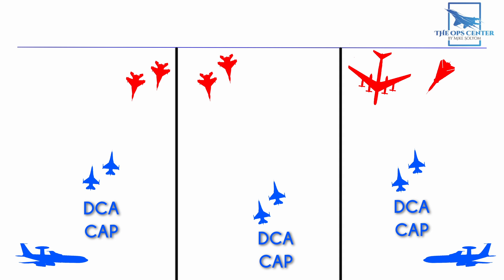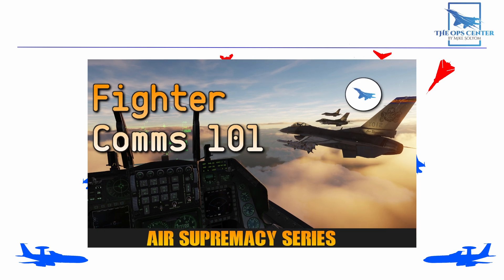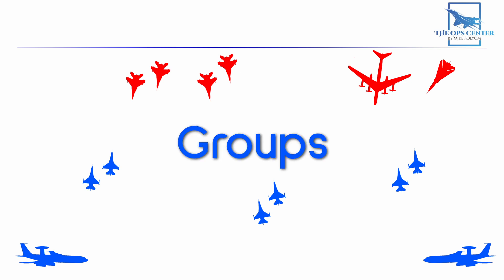That plan comes in two parts. First, different radio frequencies will be assigned for each function, so each controller has a distinct frequency, and there may even be a separate channel for check-ins. The second part is to use a common set of brevity terms to keep communication concise. That brevity starts with identifying all the assets in the air by putting them into groups.